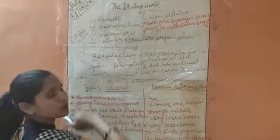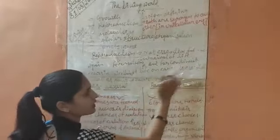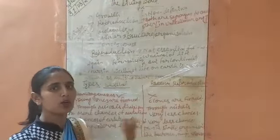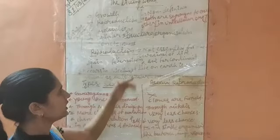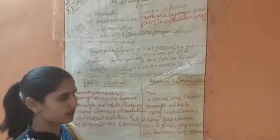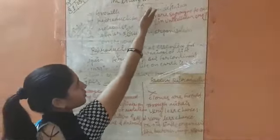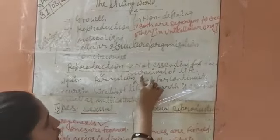Especially reproduction — reproduction is highly essential for the continuity of life on the earth. Reproduction is not very important for the survival of an individual, but it is highly essential for the continuity of life on the earth.